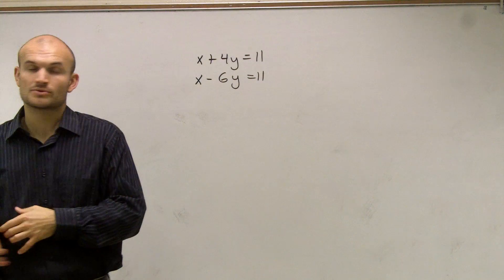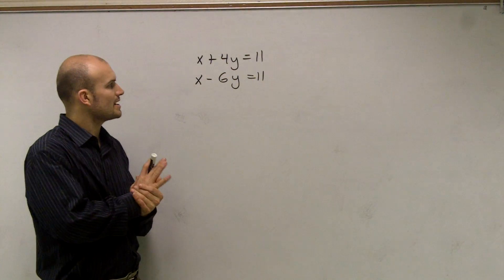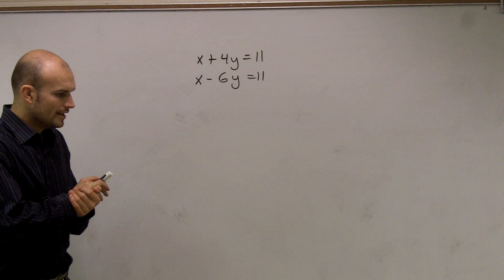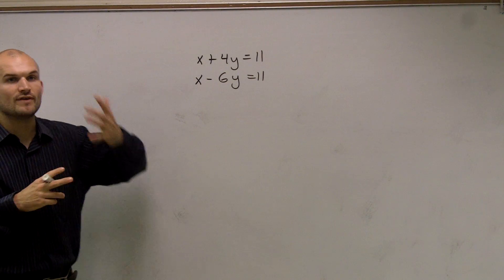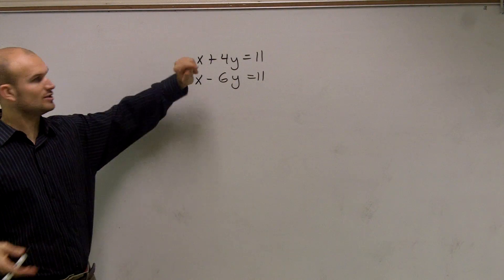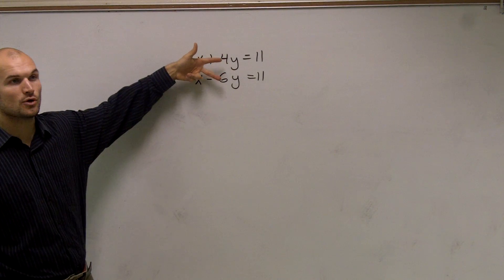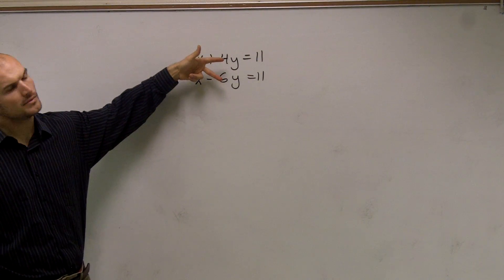We can also use a different process which we're going to call an elimination process. So what we need to do in an elimination process is, if we're not going to use substitution, we need to look and see when do two variables have the same coefficient. Let's first look at the y's. Do our two y's have the same coefficient? Are four and six the same? No.